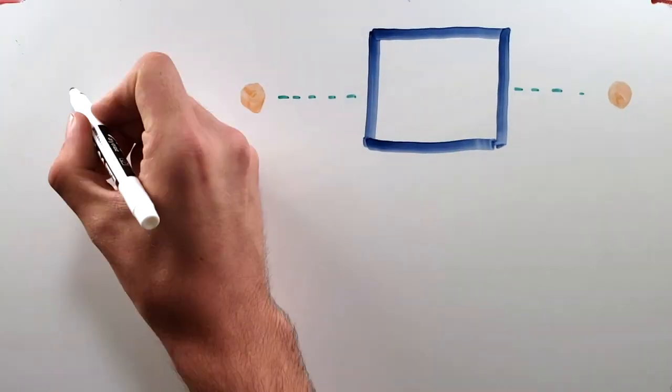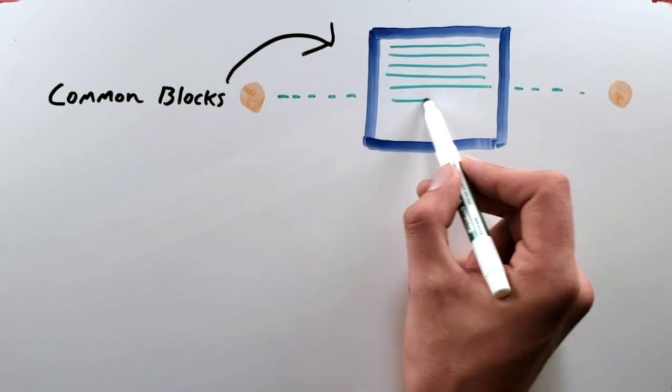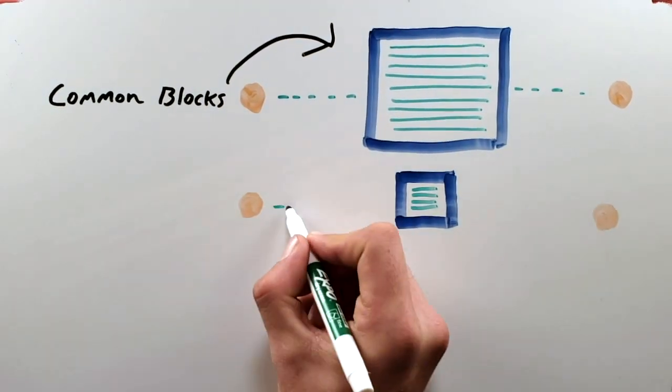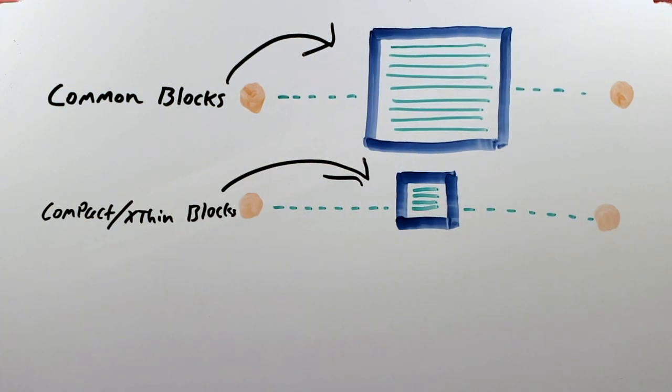To improve this, you can instead send a block with a series of shorter IDs that correspond to each transaction, so that each node can pull the matching transaction data from the mempool and construct a block themselves. This is the basic premise between things like Xthin, Compact, and Graphene blocks.